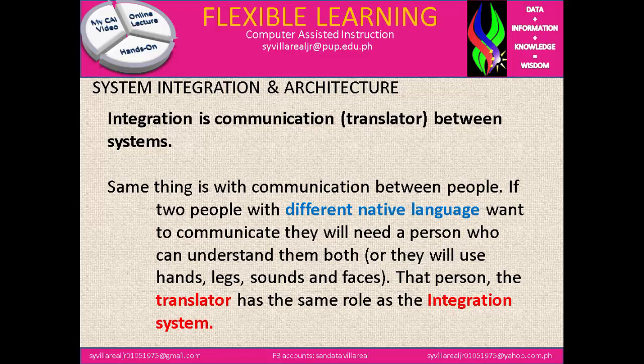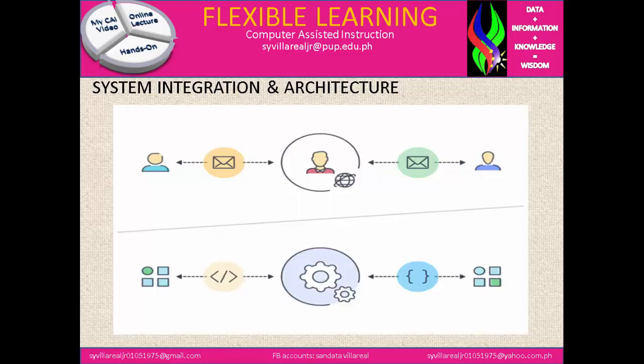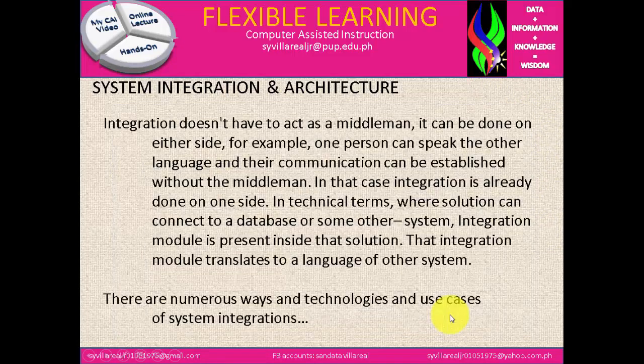Same thing applies to communication between people. If two people with different native languages want to communicate, they will need a person who can understand them both, or they will use hands, legs, sounds, and faces. That person — the translator — has the same role as the integration system. In this figure, we can identify how one person communicates to the other.